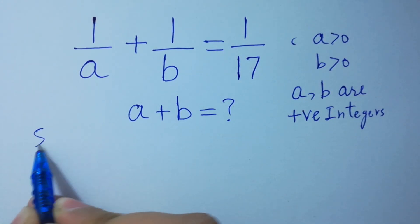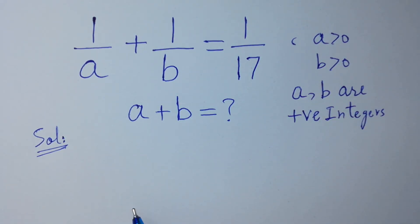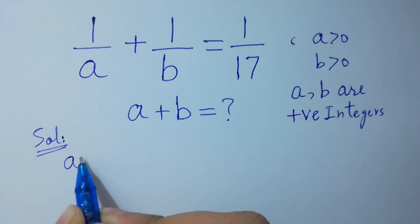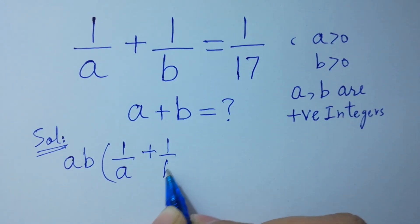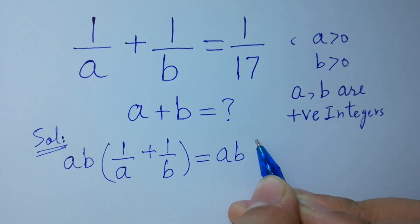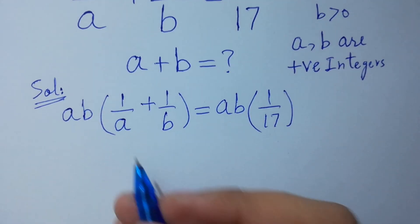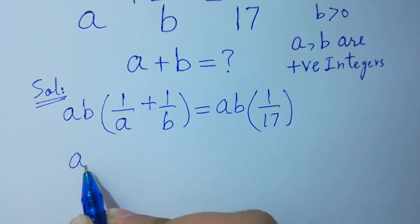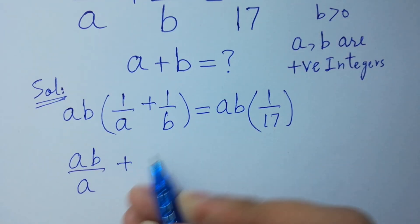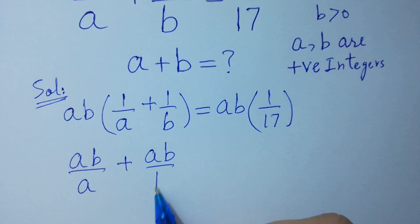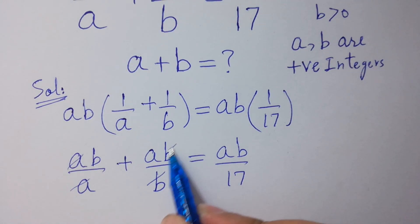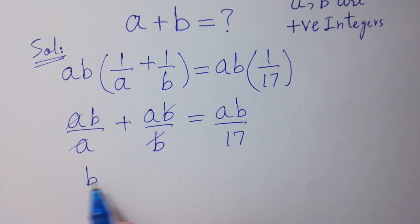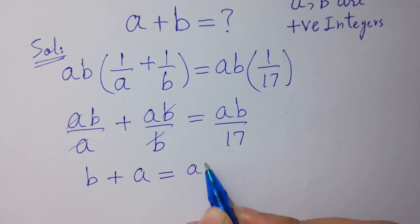To solve this, first of all we multiply both sides by ab. So ab times 1 over a plus ab times 1 over b equals ab over 17. The a's cancel and the b's cancel, giving us b plus a equals ab over 17.